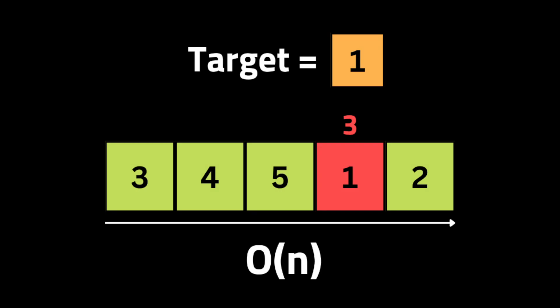The question here is: given a rotated sorted array and an integer target, return the index of the target if it exists in the array, otherwise return -1. You must write an algorithm with O(log n) runtime complexity.